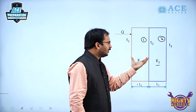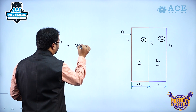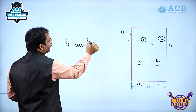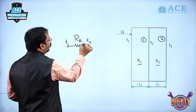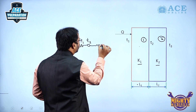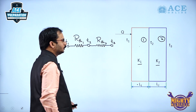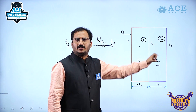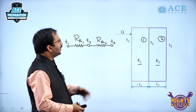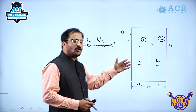This can be represented in electrical analogy. The first slab is at temperature T1 and T2, with thermal resistance RTH1. The second slab goes from T2 to T3 with resistance RTH2. We need to find the overall heat transfer in this composite wall. Under steady state, the heat transferred in the first portion equals the heat transferred in the second portion, which also equals the overall heat transfer.